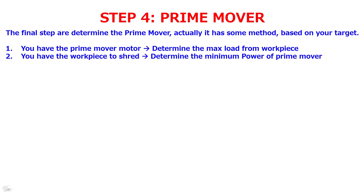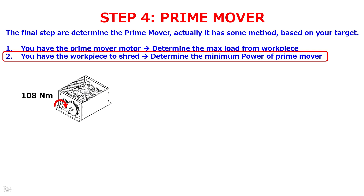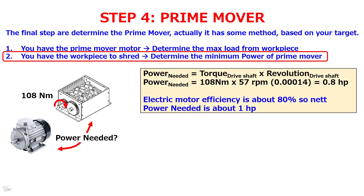The next and final step is to determine the prime mover. There are some methods based on your target. First, if you already have a motor, you determine the max load from the workpiece. If you have the workpiece to shred, you determine the minimum power of the prime mover. In my case, I have a shredder mechanism with a known torsional load from the workpiece and I need to determine how much power is required.